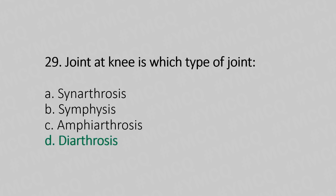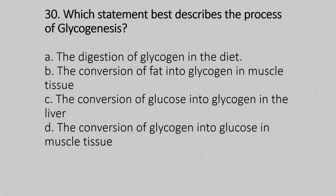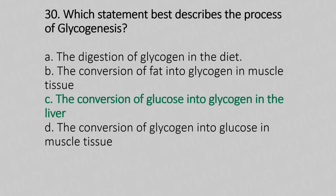Now let's move to question number 30. Which statement best describes the process of glycogenesis? Option A: the digestion of glycogen in the diet. Option B: the conversion of fat into glycogen in muscle tissue. Option C: the conversion of glucose into glycogen in the liver. Option D: the conversion of glycogen into glucose in muscle tissue. And the answer is Option C — the conversion of glucose into glycogen in the liver.